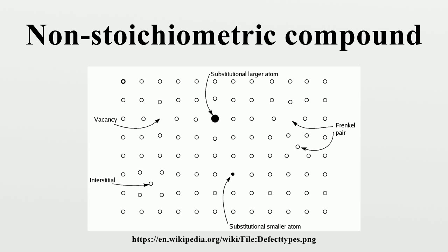Definition: Non-stoichiometric compounds are chemical compounds having elemental composition whose proportions cannot be represented by integers. They are most often inorganic compounds, and almost always solids. In such materials, some small percentage of atoms are missing or too many atoms are packed into an otherwise perfect latticework.